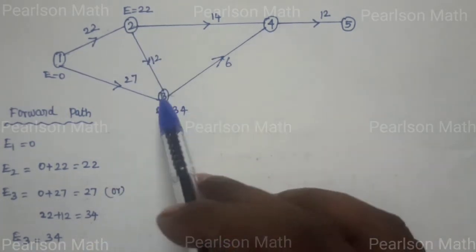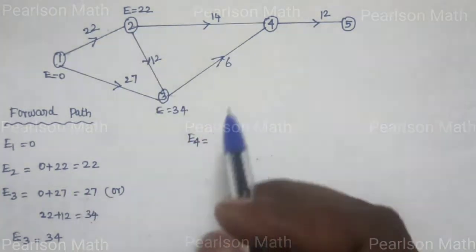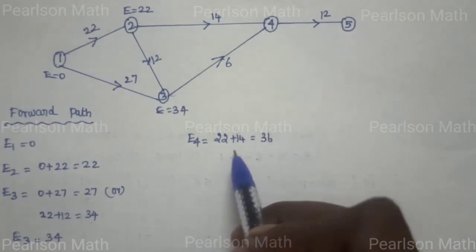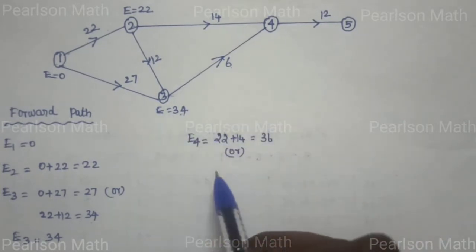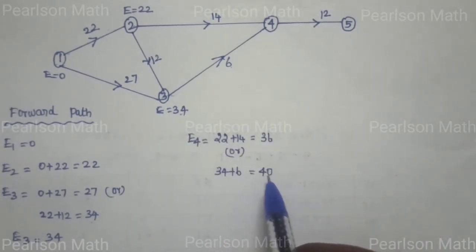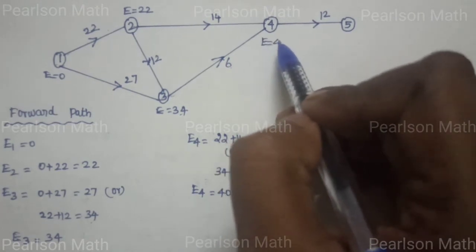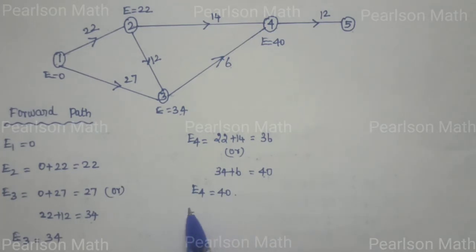Next is node 4. For 2 to 4 and 3 to 4, two possibilities: 2 to 4 is 22 plus 14 equals 36, or 3 to 4 is 34 plus 6 equals 40. E4 equals 40, the maximum number. E5 equals 40 plus 12 equals 52.